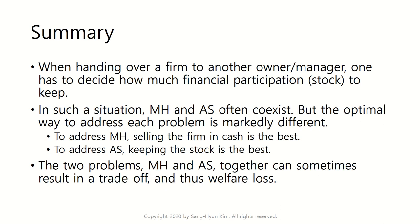In summary: when handing over a firm to another owner-manager, one must decide how much financial participation or stock to keep. Moral hazard and adverse selection often coexist, but the optimal way to address each is markedly different. To address moral hazard, selling the firm for cash is best; to address adverse selection, keeping the stock and hiring a manager is best. When both problems exist together, there is a trade-off that results in welfare loss.